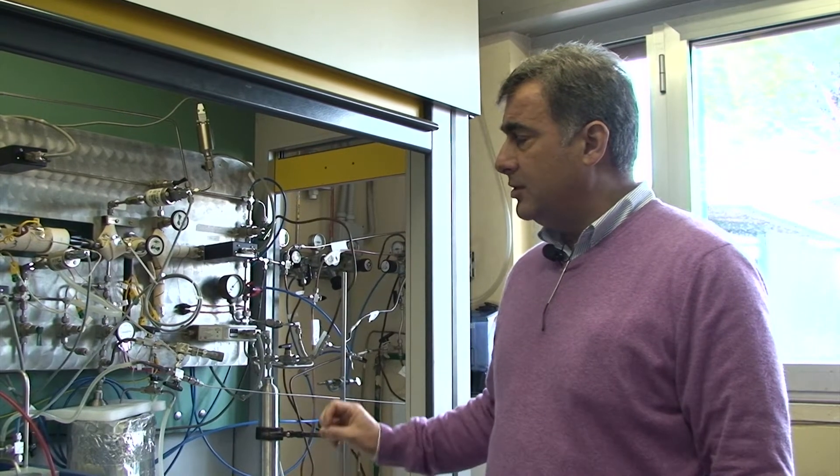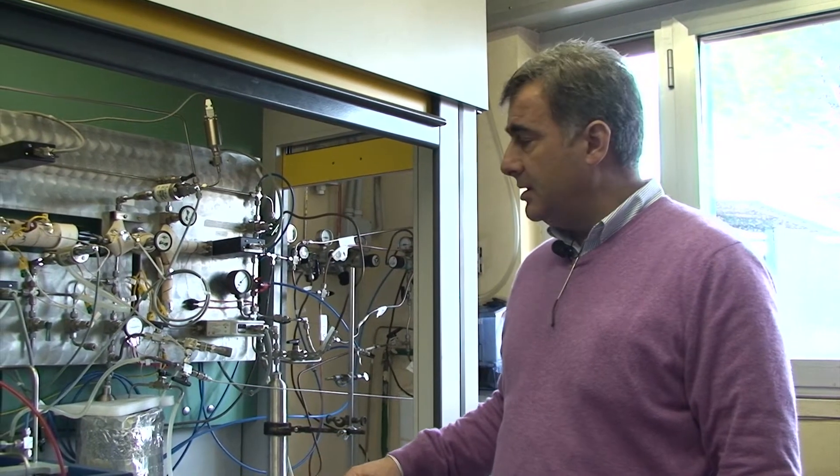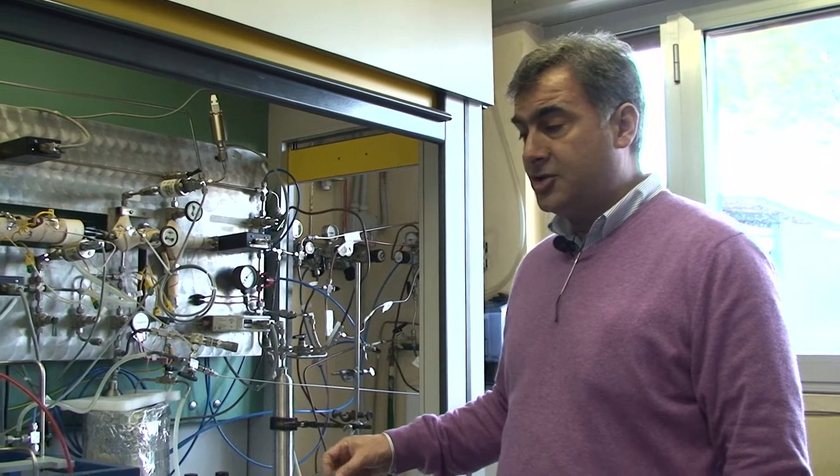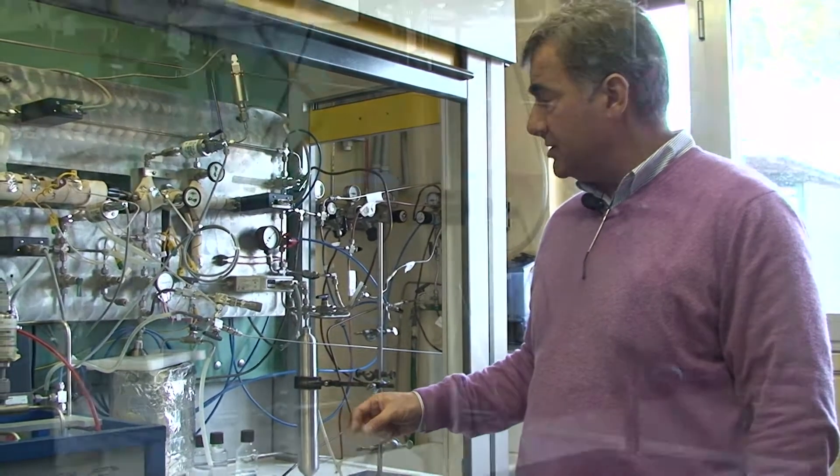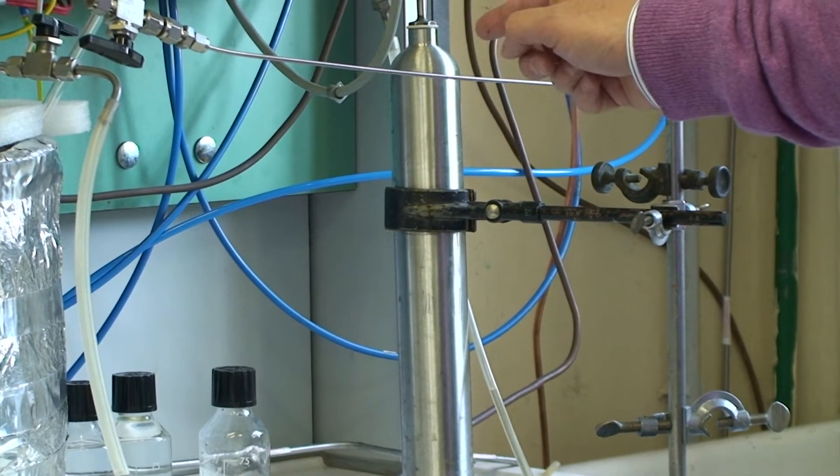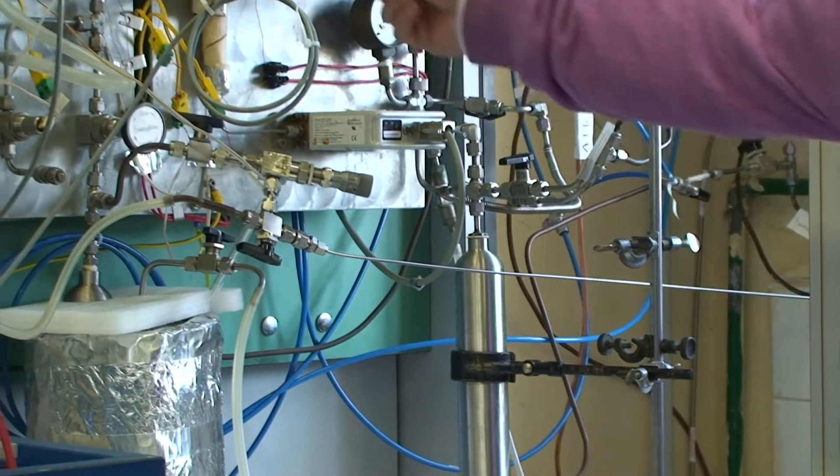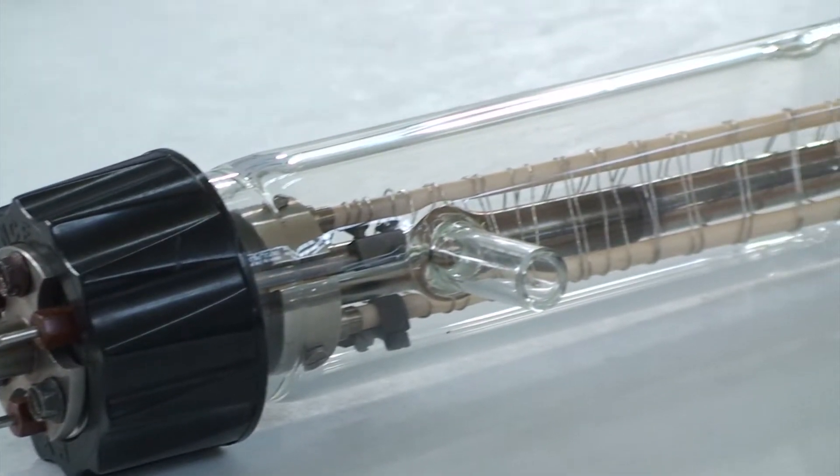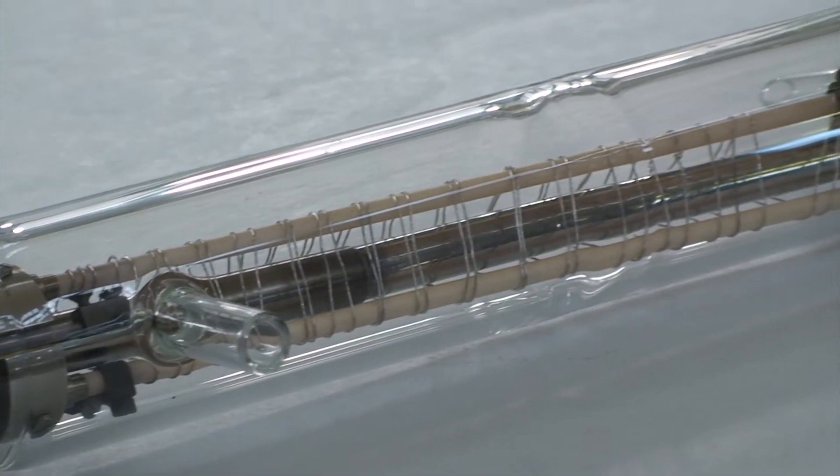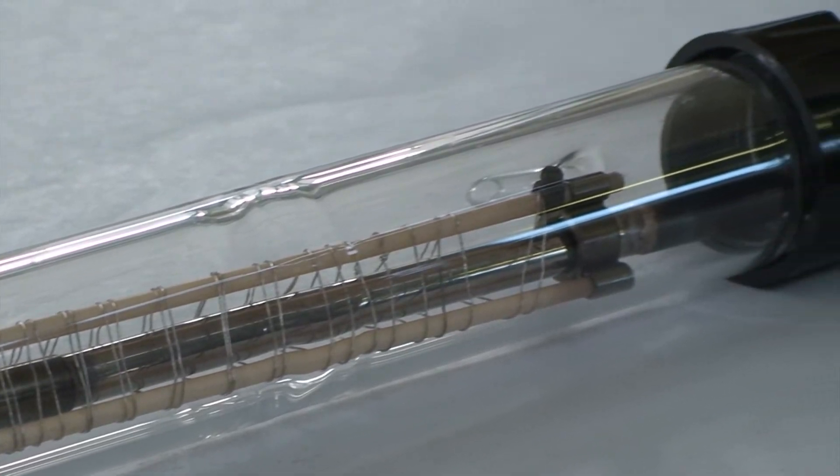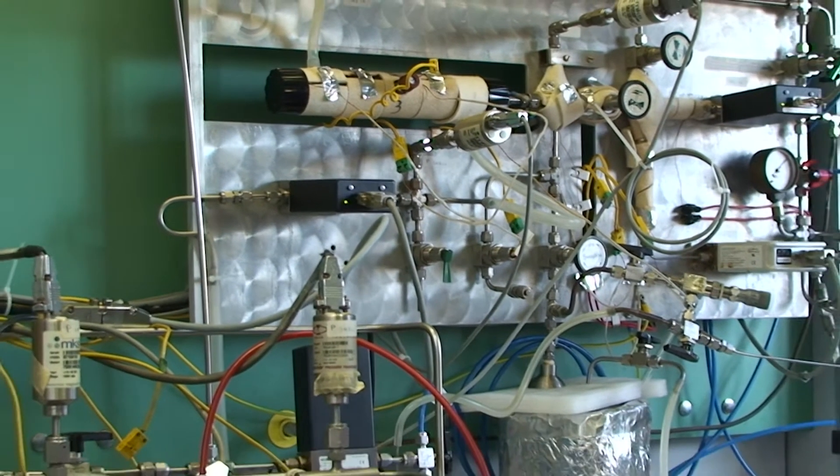In this experimental setup, we produce ultra-pure hydrogen starting from a reforming reaction of hydrocarbon and alcohols. We feed this biomass through this mass flow controller inside a membrane reactor. Ultra-pure hydrogen is separated through the membrane and then collected through this mass flow meter. In this way, we can produce pure hydrogen starting from biomass.